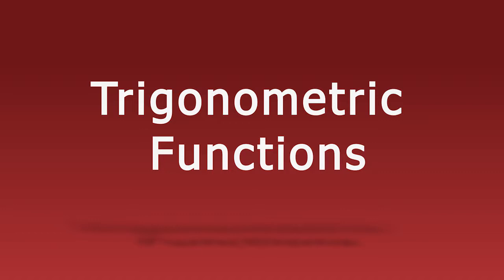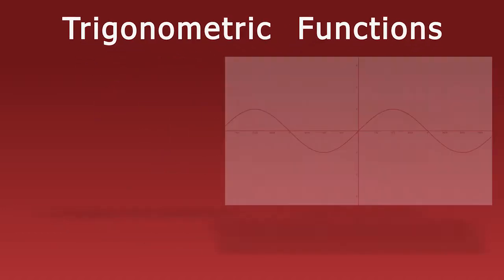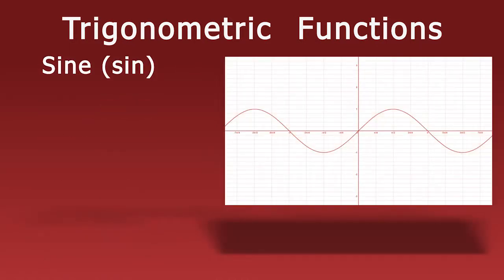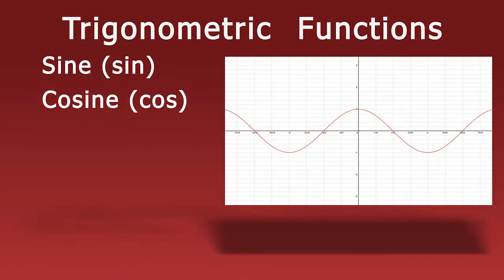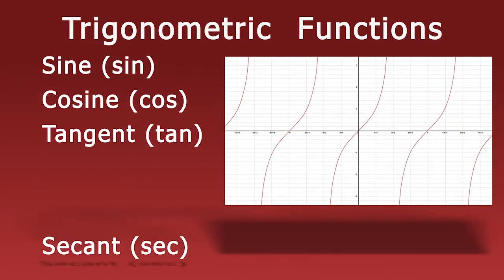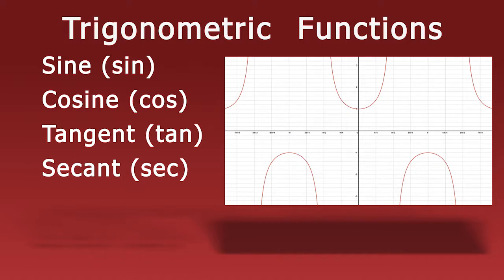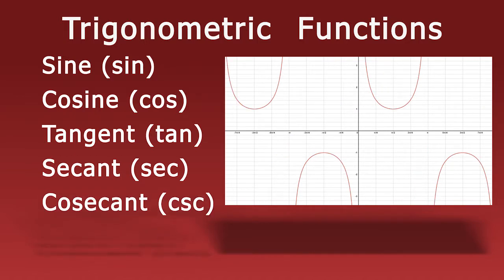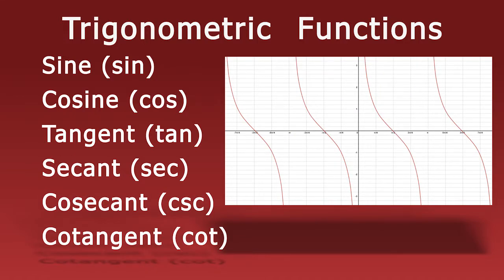There are six basic trigonometric functions: Sine, Cosine, Tangent, Secant, Cosecant, and Cotangent.